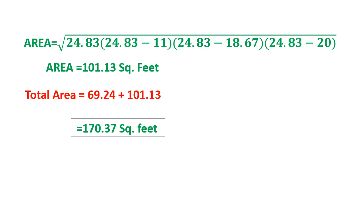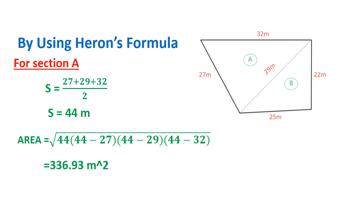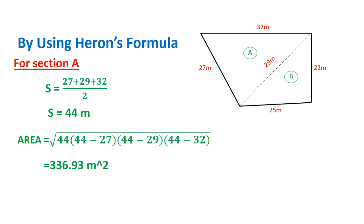In this way, we calculate the area of an irregular shape. Next is how to calculate the irregular length area in square meter. This is the area of the plot shown here where all dimensions are considered in meters. We have to follow the same procedure: first, draw a diagonal line like this. I will consider this area as section 1 and this area as section 2. Firstly, I will find the area for section 1. S is equal to half of the sum of all sides — S is the semi-perimeter.